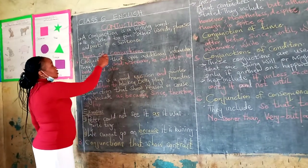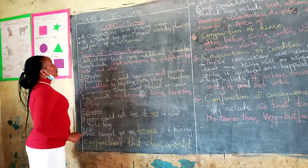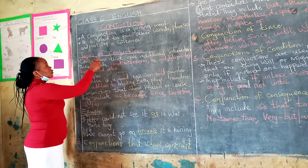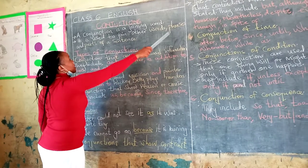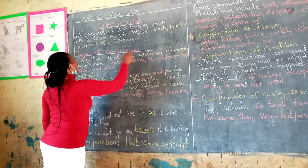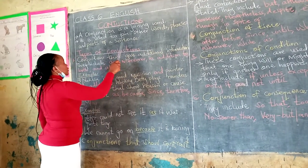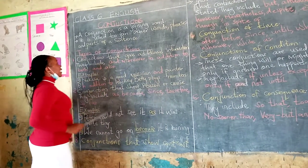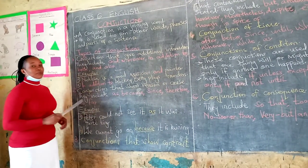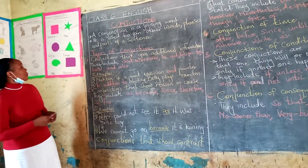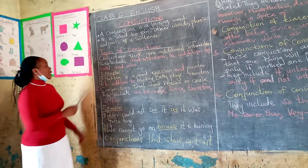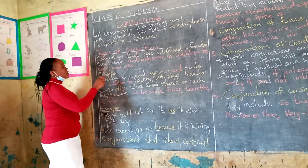Now, a conjunction is a joining word. It is used to join other words, phrases, and parts of a sentence. Now let's see the kinds of conjunctions that we have. There are six of them. So let's start with number one.